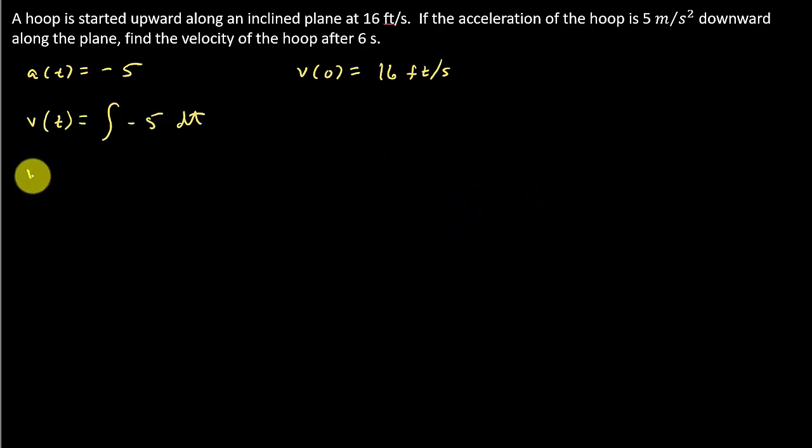Alright, so that's going to give me v of t is equal to negative 5t plus c. Don't forget that constant term. Well, now I need to figure out what the constant term is. Well, I know that v of 0 is 16. So that means if I plug 0 in for t, I plug 0 in for t because of this, that should equal 16.